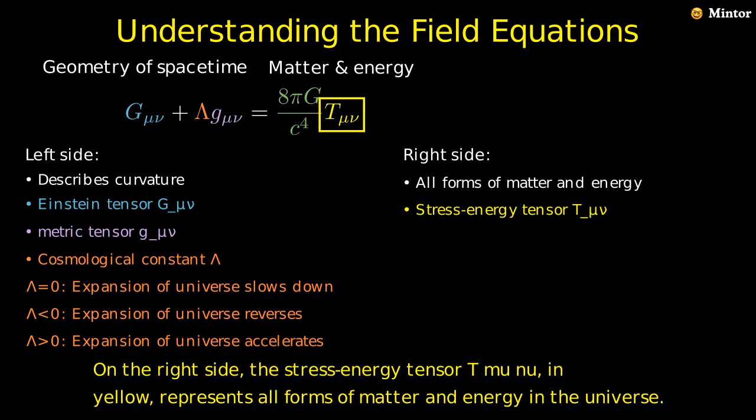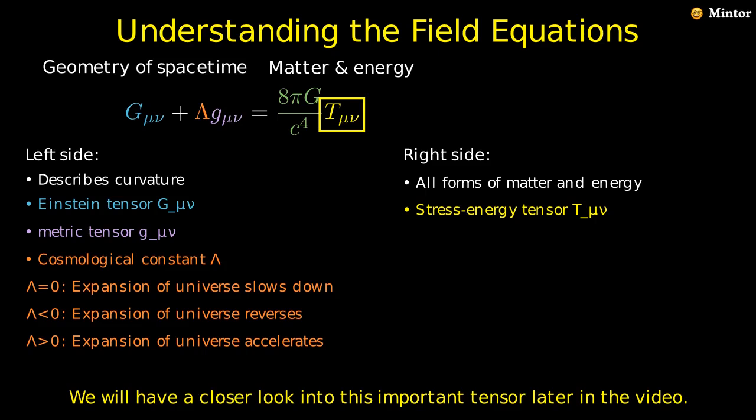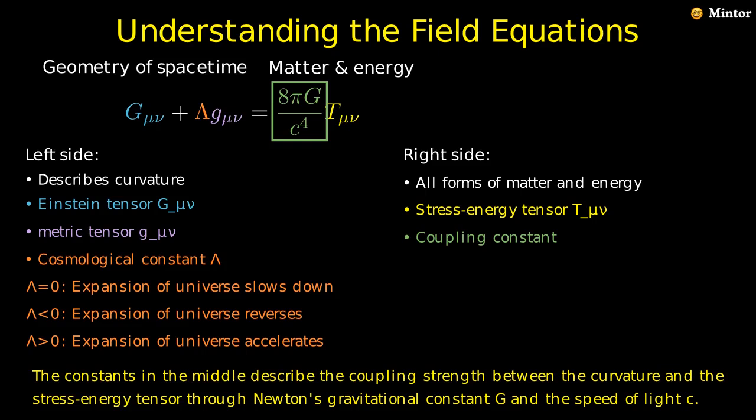On the right side, the stress-energy tensor T_μν in yellow represents all forms of matter and energy in the universe. We will have a closer look into this important tensor later in the video. The constants in the middle describe the coupling strength between the curvature and the stress-energy tensor through Newton's gravitational constant G and the speed of light c.